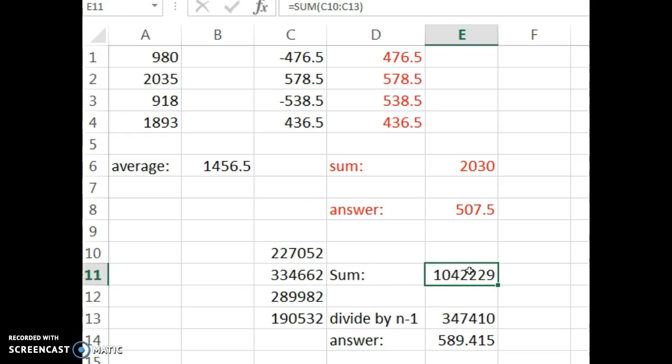And then you add up all those values after you square them. For the sample standard deviation, you divide by one less than there were. So instead of dividing by four, I divide here by three. Then you get your final answer. You take the square root of that whole value. So you take the square root of this and you get 589.415.